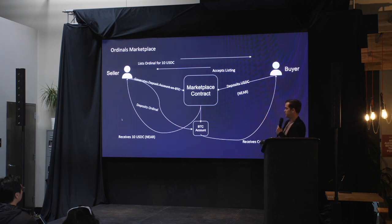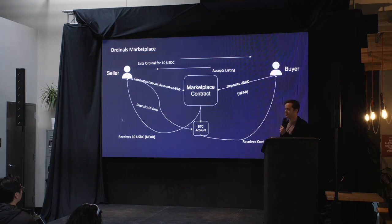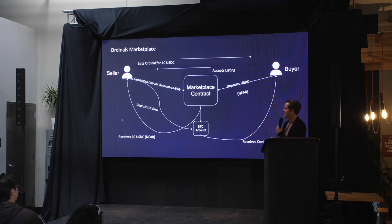This is how we can build a truly trustless, or at least trust-minimized, ordinals marketplace using Chain Signatures. You can extend this pattern to many different chains — especially non-smart contract chains like Ripple, Dogecoin, or Bittensor. It's a very broad design space and we're pretty excited about it.